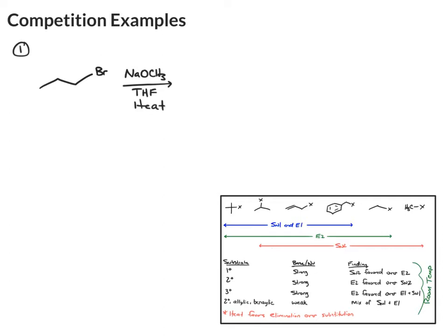So in this case, we have a primary halide, and the primary halide can do SN2 and E2 reactions. Next, look at the nucleophile, and this is Na plus OCH3 minus. O minus is strong, and it's a strong base and nucleophile. So what that means is it's going to favor SN2 and E2 mechanisms.